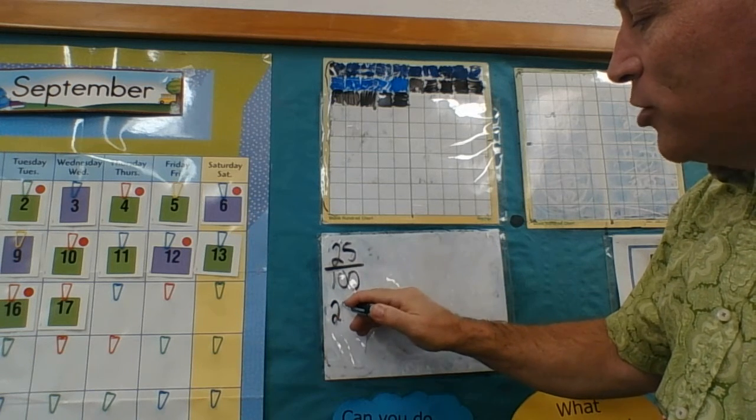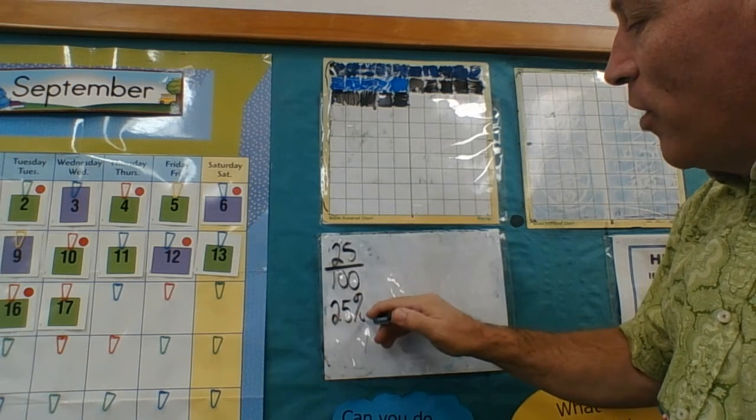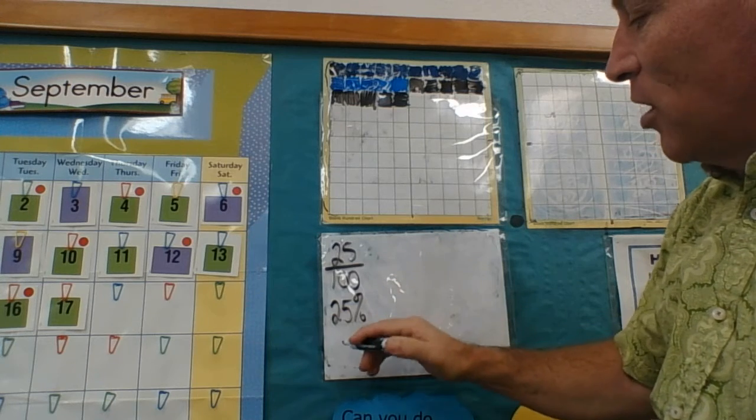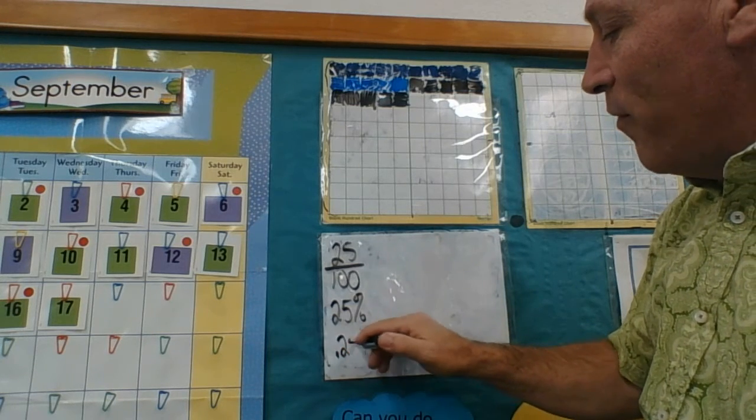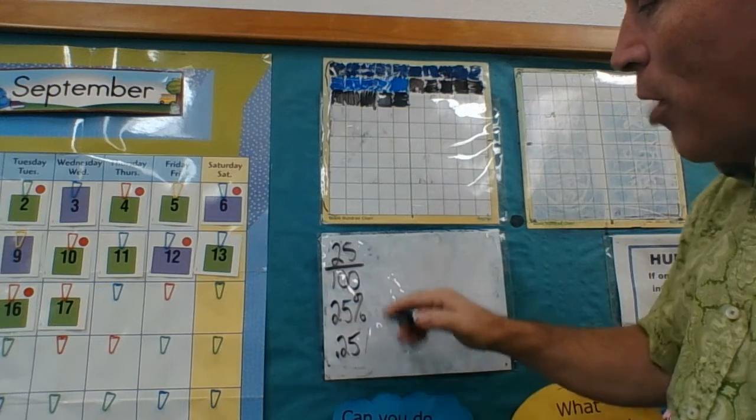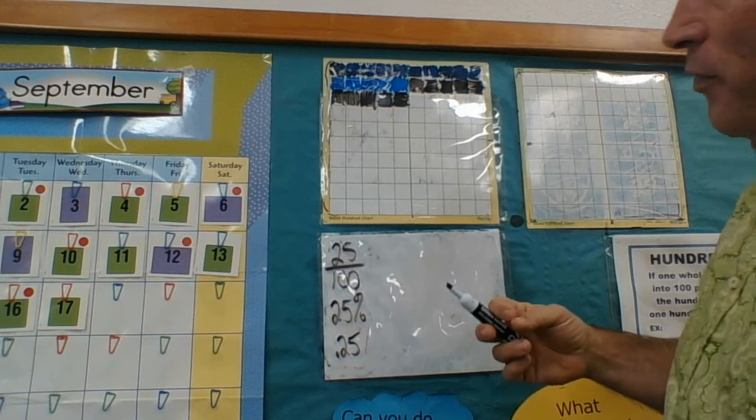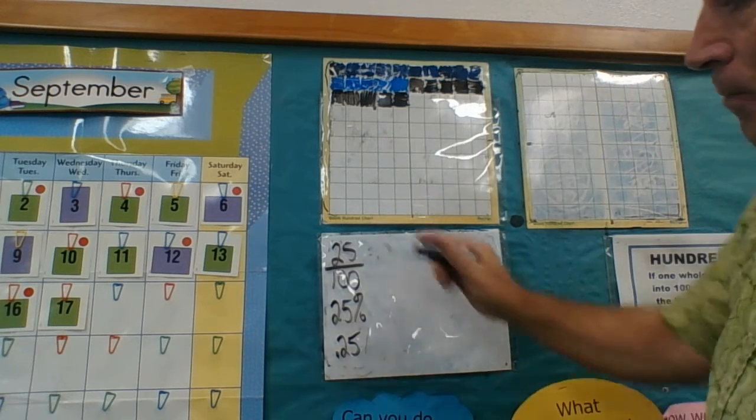And we know just for redundancy to make sure you never forget it. That's the same thing as 25% because per means out of and cent means a hundred and 25 hundredths. Both of these represent a way of out of a hundred automatically.